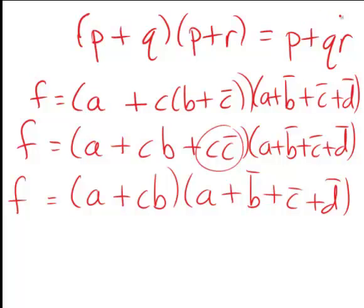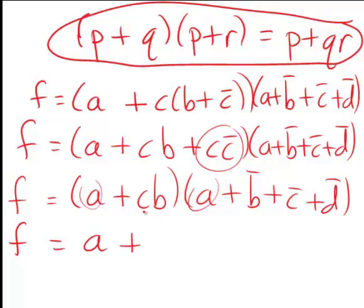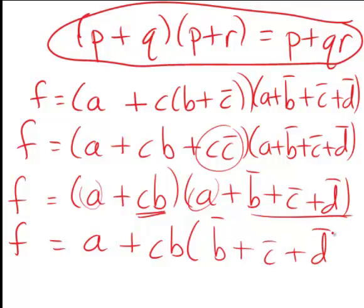But we can actually apply this general principle of Boolean algebra again here because this bracket and this bracket have a as a common term. Therefore f will now become a plus the product of the other terms in the brackets, which is c b multiplied by b bar plus c bar plus d bar.